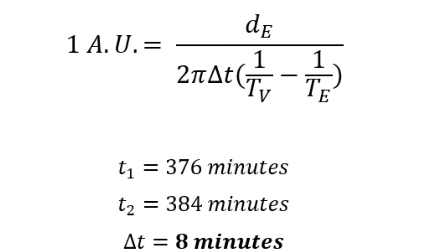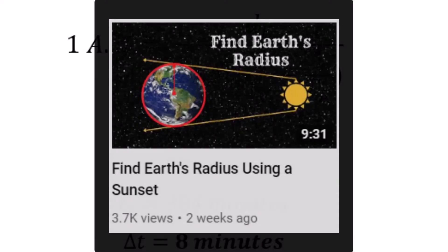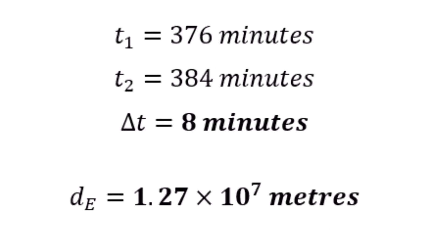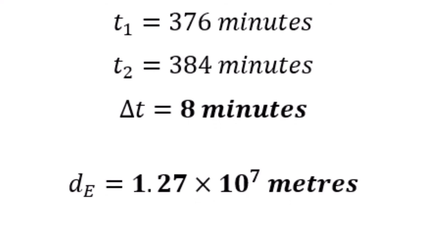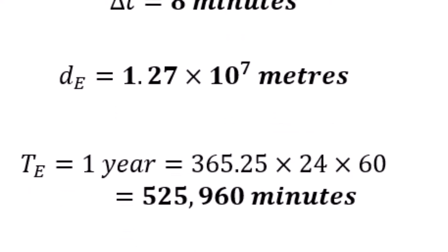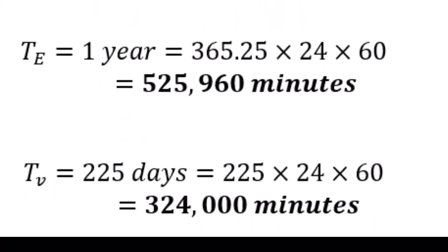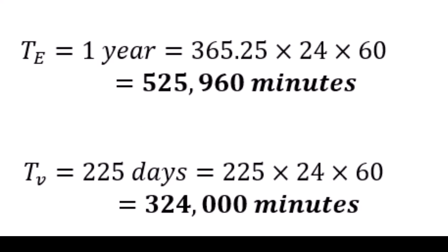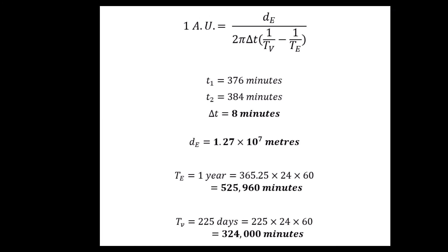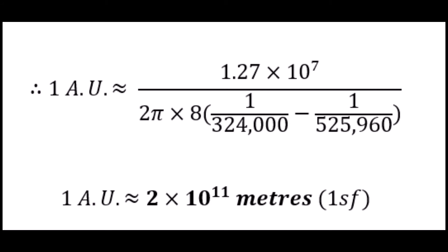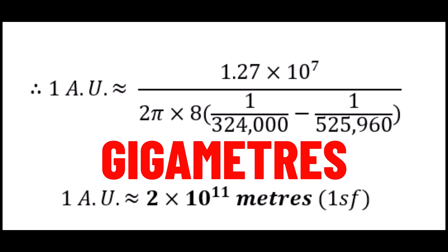Before I plug stuff into the derived equation, I also need to know some other values, notably the diameter of the Earth. I've already found Earth's radius in one of my previous videos using a sunset — I'll show it on screen now, so check that out afterwards. Our diameter is of course twice the radius, so with that I'm all good. TE is the length of the year, i.e. 365 and a quarter days. Since I've given delta T in minutes, I'll also give TE in minutes, which is around 525,960 minutes. Finally, I need TV, the period of Venus. I haven't made an experimental video on this yet, nor is it trivial to calculate, so I'll begrudgingly stick with the easier method of googling it, which gives TV as 225 days, which is 324,000 minutes. Brilliant — we have everything we need to find the astronomical unit. Plugging it in gives one astronomical unit as 2 times 10 to the 11 meters, or 200 million kilometers if you prefer, or around 200 gigameters to one significant figure.